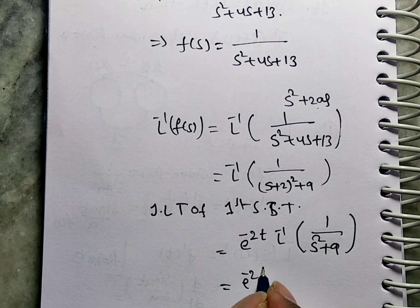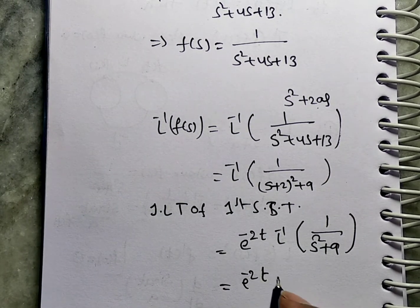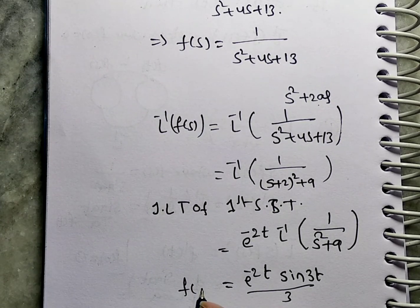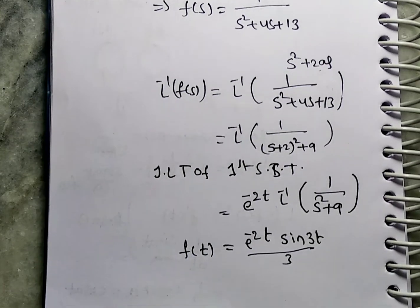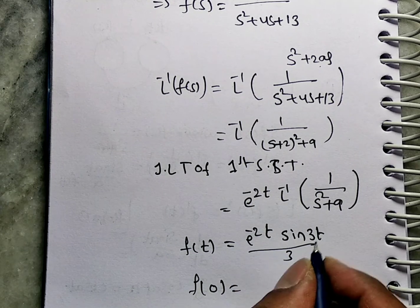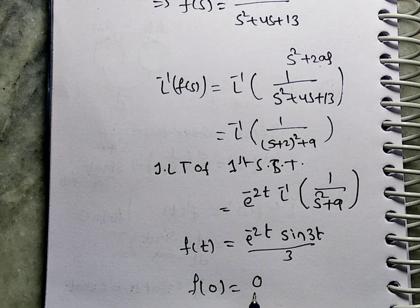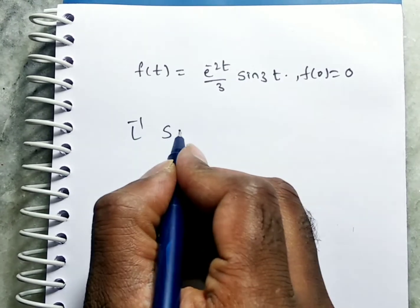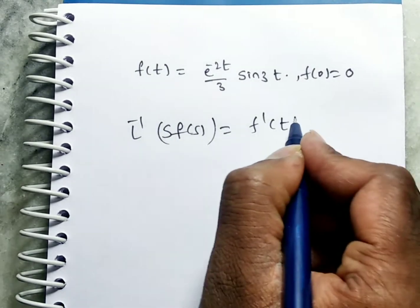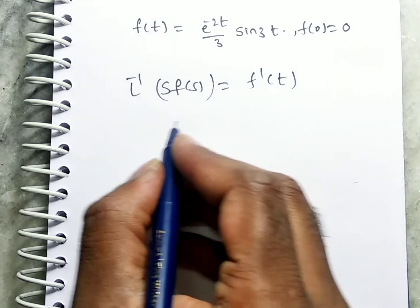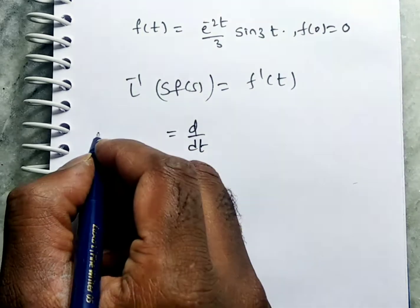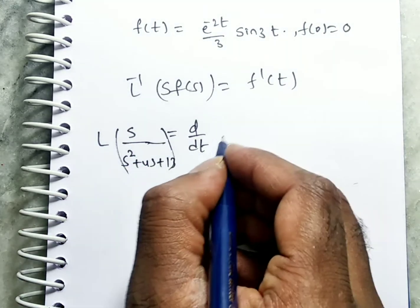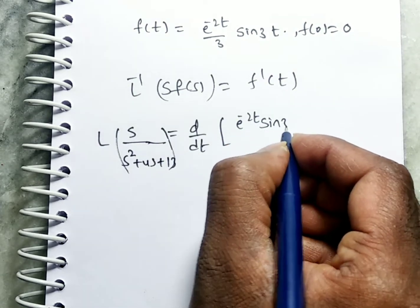Now find f(0): E^0 is 1, sin(0) is 0, so f(0) equals 0. Good. By the definition, L inverse of S·F(S) equals f'(T). So L inverse of S/(S²+4S+13) equals d/dT of [E^(−2T)·sin(3T)/3]. Writing 1/3 outside and applying the UV rule: UV' + VU'. We get E^(−2T)·cos(3T)·3 plus sin(3T)·E^(−2T)·(−2).